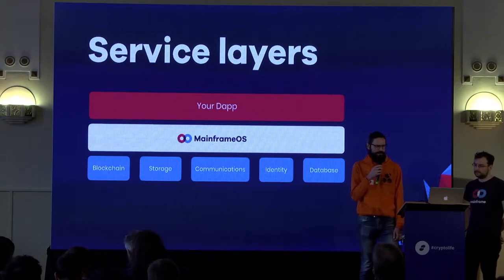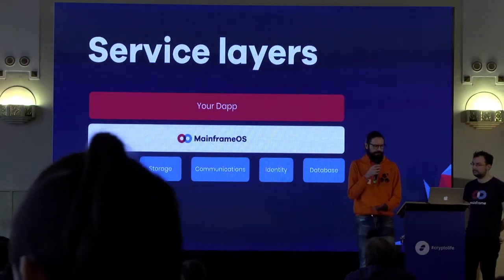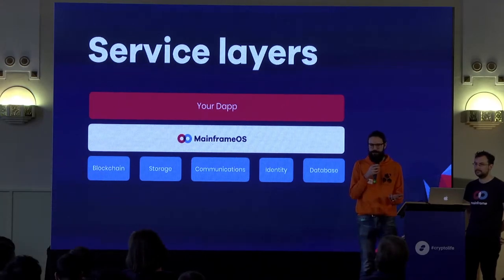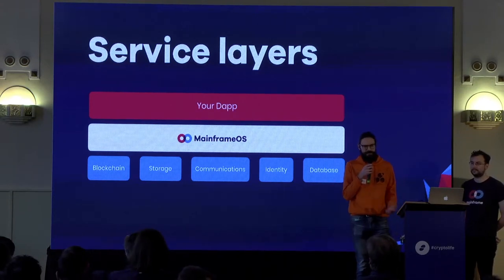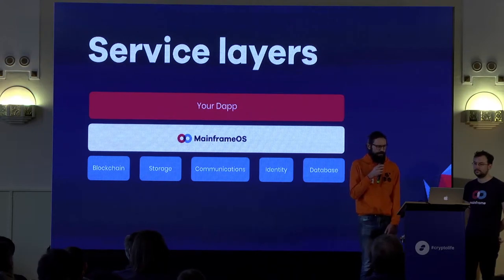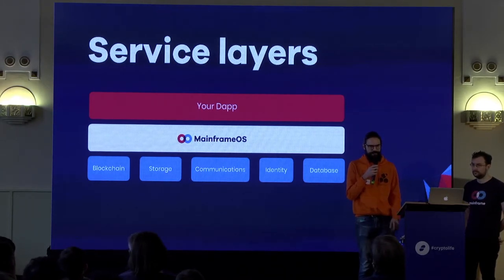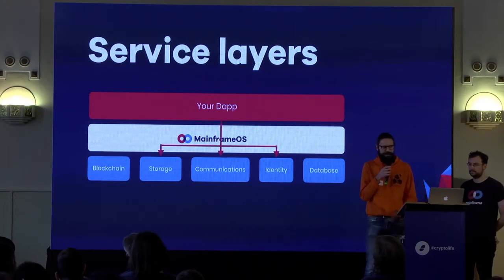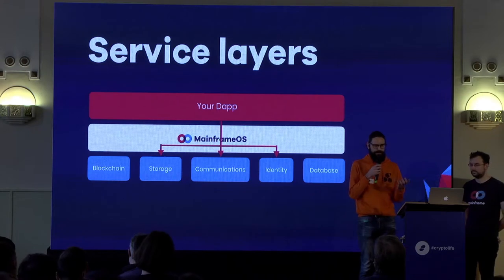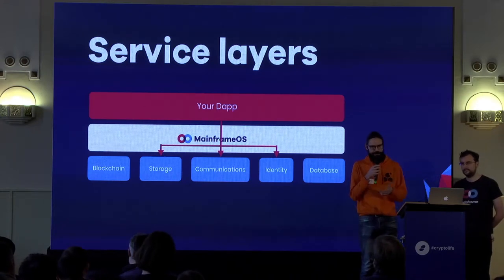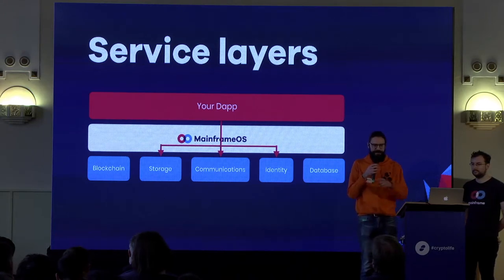The first service layers we've integrated are Ethereum and Swarm, providing some initial functionality. For other service layers we'll need to collaborate with other projects. Another benefit of providing all these service layers as a single package is integrations between them. For example, to notify another user that you've uploaded an encrypted file for them, that could be handled as a single operation: first going to the identity service to get the user's encryption key, encrypting the file, uploading to the storage layer, and then sending the notification via the communications layer — rather than a developer having to knit these layers together manually.